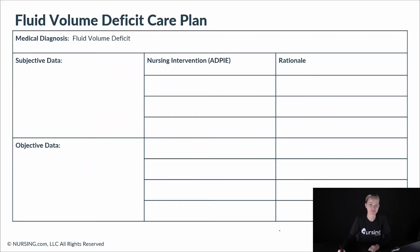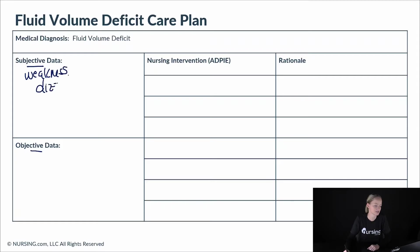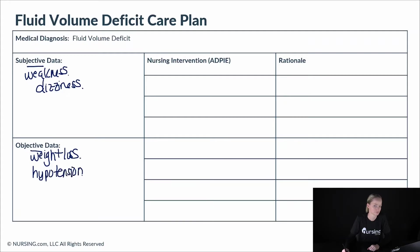Now let's dive into the care plan. We're going to be writing out some subjective data and some objective data. Some subjective data could be weakness and dizziness. Some objective data we'll see: maybe some weight loss, hypotension, and maybe concentrated urine.